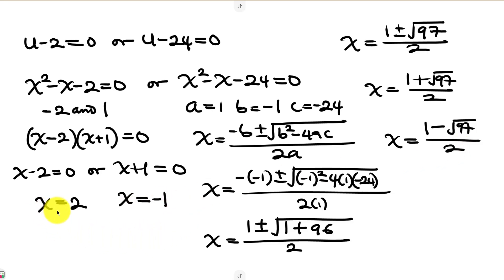So we have four values of x in total: x = 2, x = −1, x = (1 + √97)/2, and x = (1 − √97)/2. Feel free to share your ideas in the comments. If you enjoyed this video, give it a thumbs up, subscribe, and turn on the notification bell so you don't miss upcoming videos. Until next time, take care!